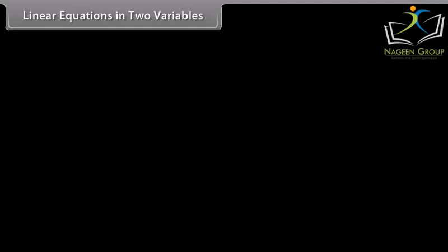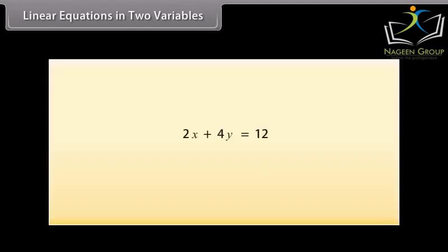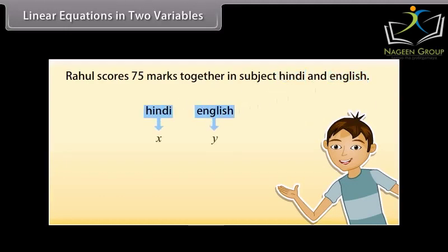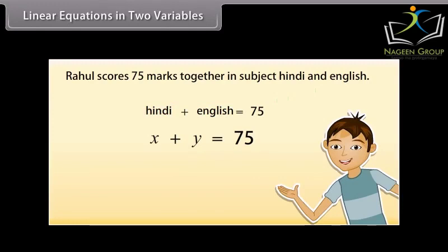Linear equations in two variables. A linear equation can have more than one variable. Here we will study linear equations in two variables. Let's take an example: Rahul scores 75 marks together in Hindi and English. How can we express this information as an equation? The marks of neither subject are known — there are two unknown quantities. Let us use X and Y to denote them. So, the marks scored in Hindi is X and in English is Y, giving us X plus Y equals 75 as the required equation. This is an example of a linear equation in two variables.